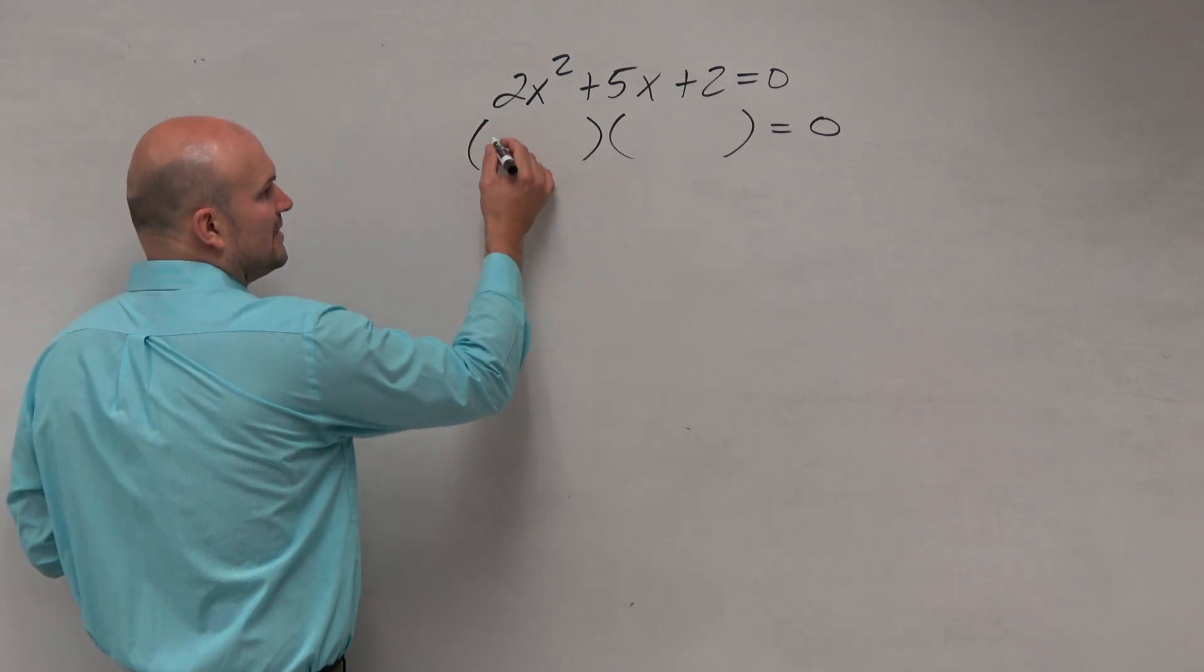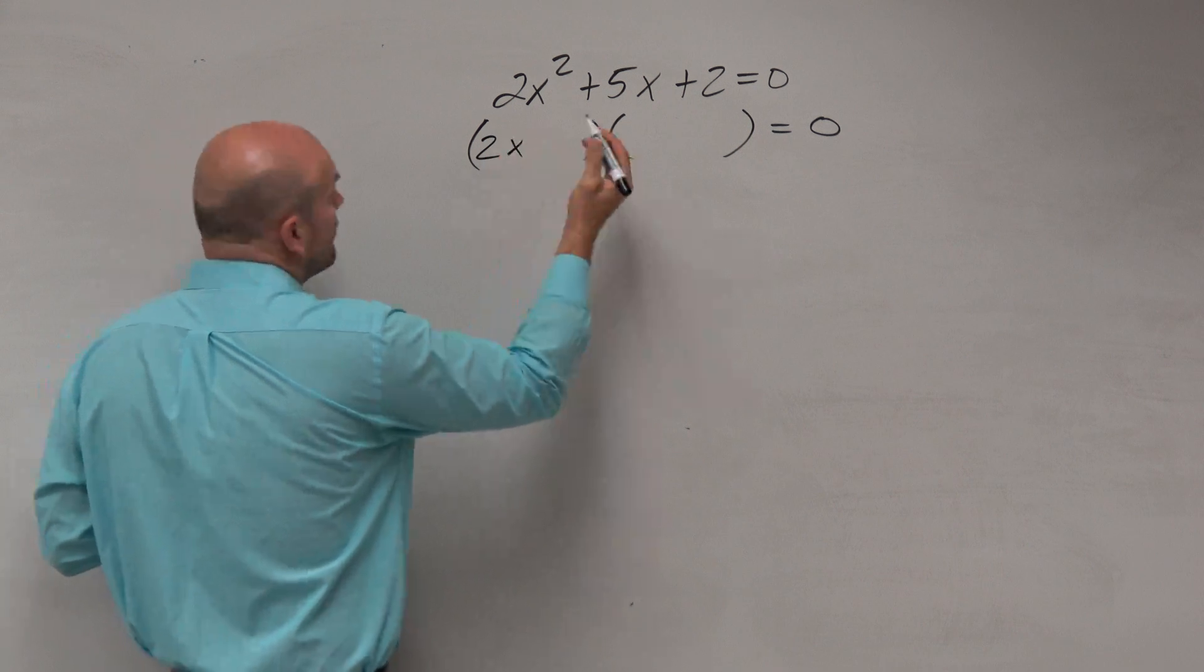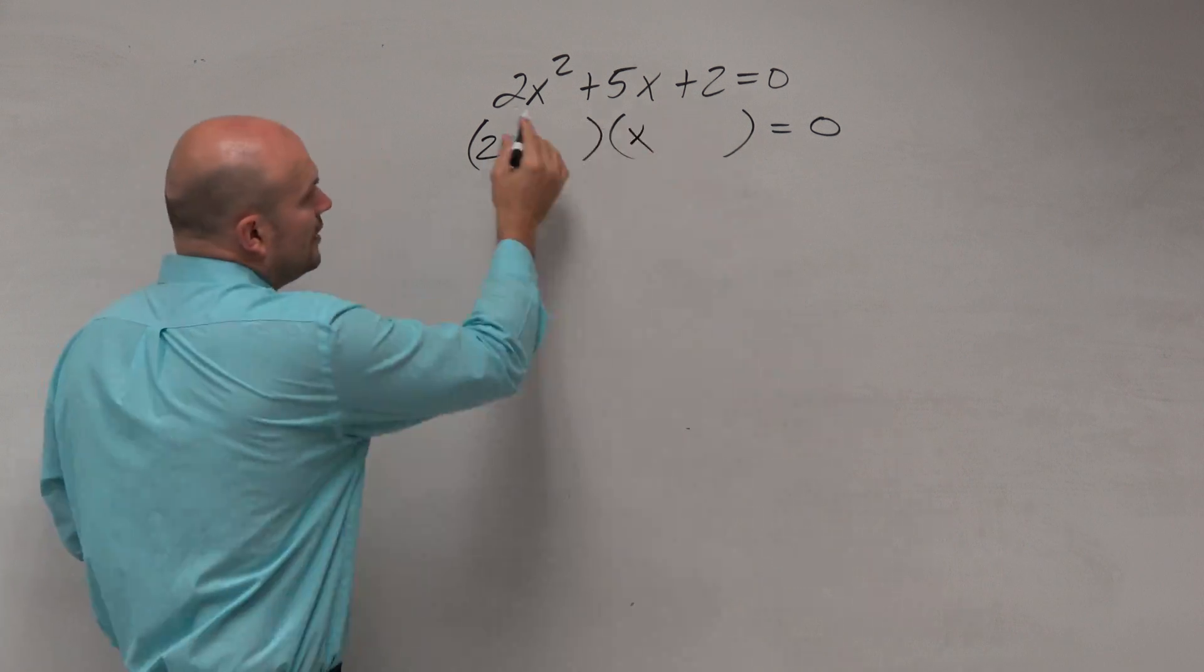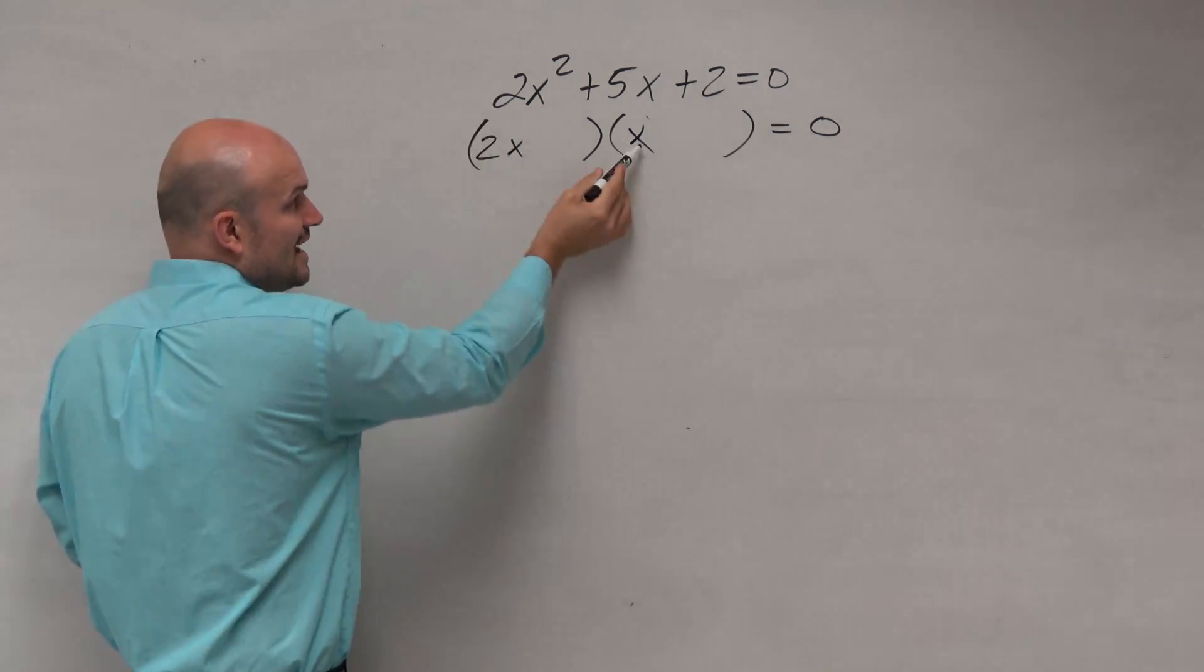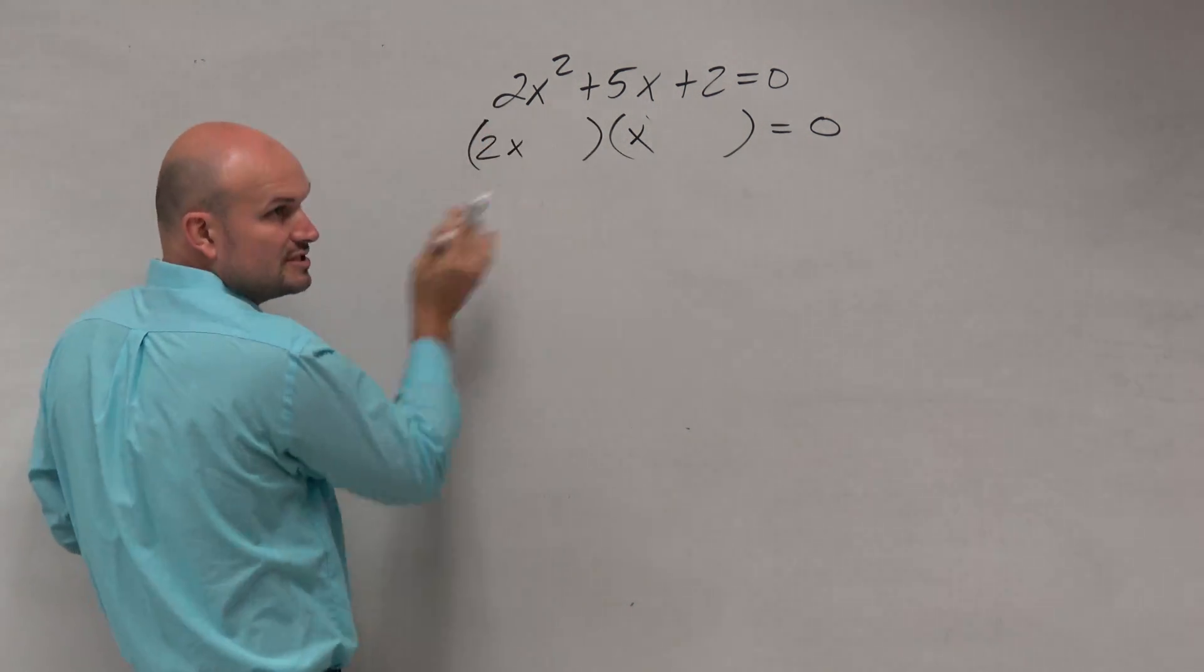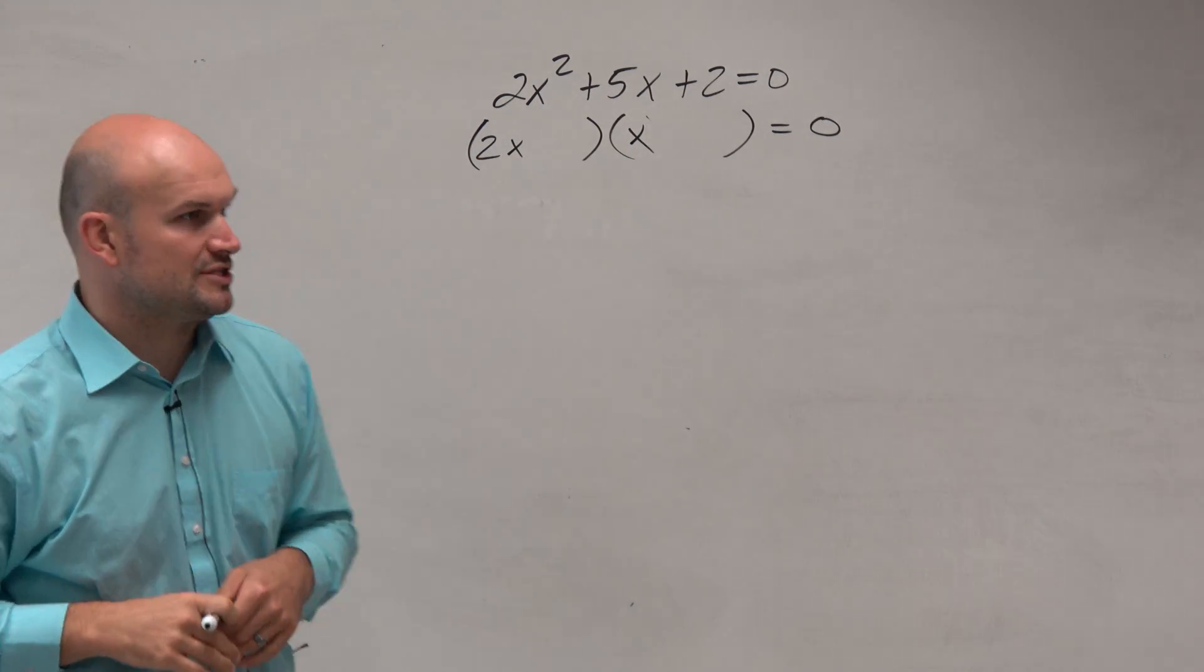If we remember that with the product of two binomials via distributive property, or you may remember it as FOIL, the first two terms are going to give you that first term in your trinomial. So 2x and x needs to give you 2x squared, which it does.